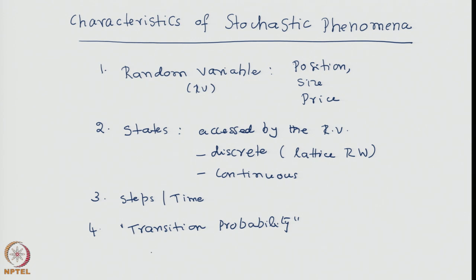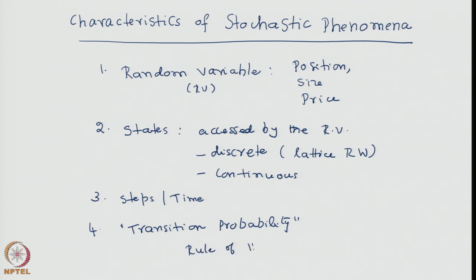To make the idea more concrete: the transition probability is essentially a conditional probability. It states the probability that, given the system is in some state d at some time step n, it transits to state a at the next time step n plus 1. That probability essentially governs and defines the rule of the process — it is a very key quantity.